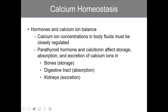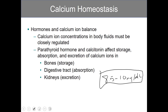Calcium ion concentrations in body fluids have to be closely regulated. Blood calcium levels have to be maintained between 8.5 and roughly 10 milligrams per deciliter. What enables the body to maintain calcium within this very narrow range are a pair of hormones.